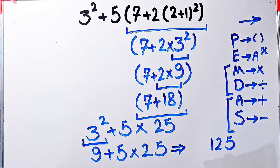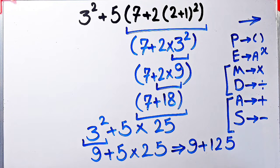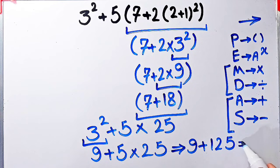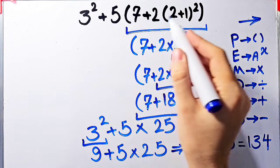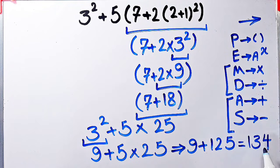Five times twenty-five equals one hundred and twenty-five. Now we have nine plus one hundred and twenty-five. Nine plus one hundred and twenty-five equals one hundred and thirty-four. The final answer of this question equals 134.